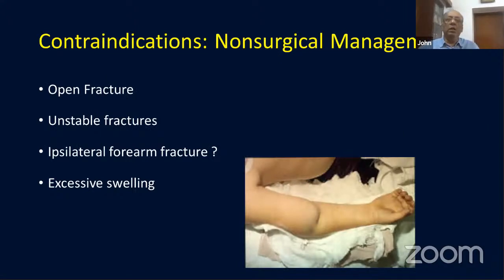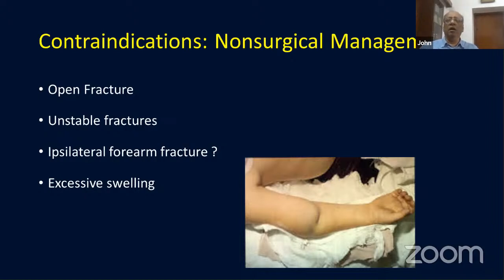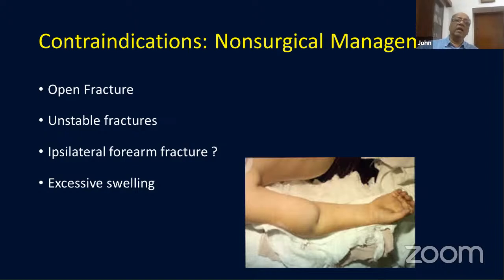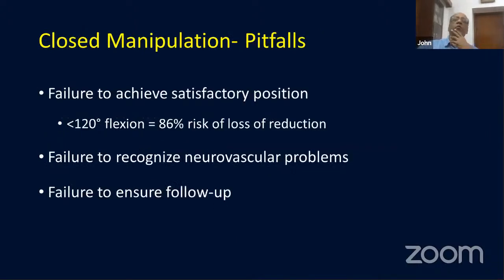Contraindications to conservative treatment include open fracture, very unstable fracture, ipsilateral forearm or distal radius fracture — in which case fixation makes sense. If there is significant swelling, maintaining extreme flexion in a cast is risky, so it makes sense to reduce and pin, then semi-extend the elbow without losing reduction.